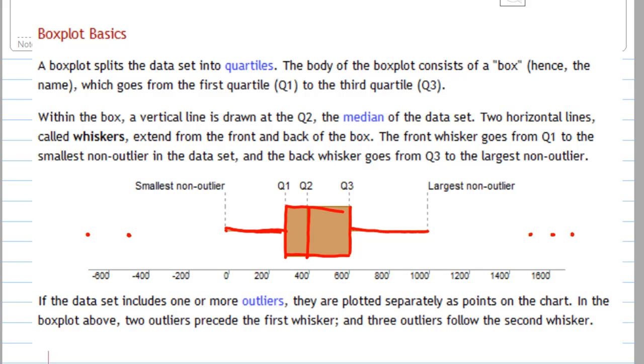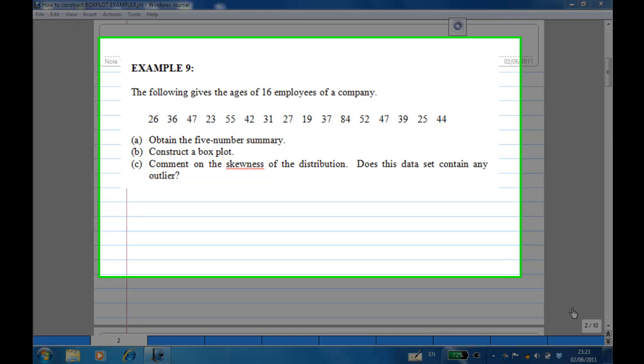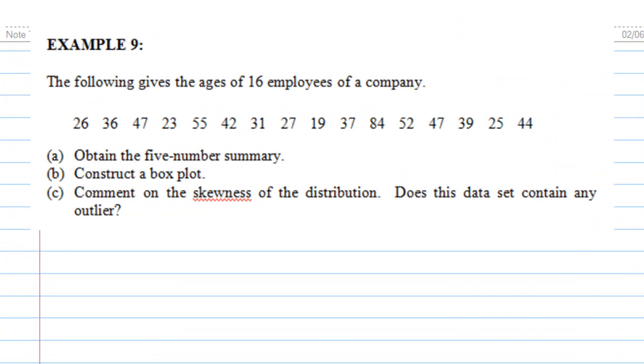Let's look at the example. To construct the box plot, you first obtain the five number summary. This example, Example 9, consists of the ages of 16 employees of a company.